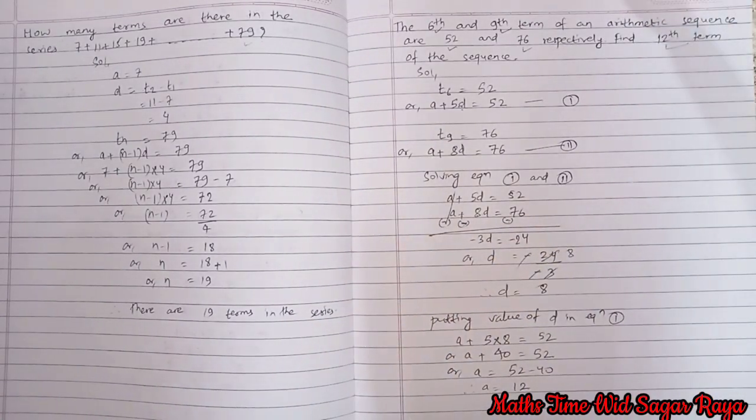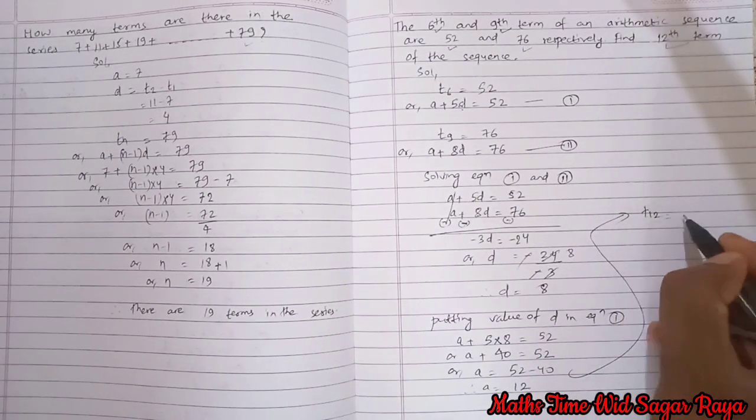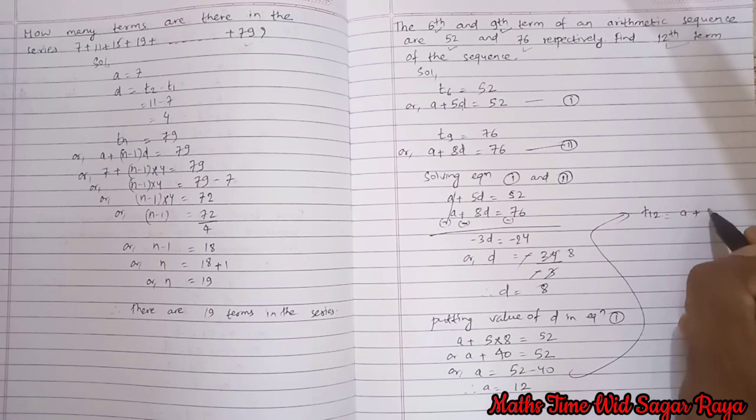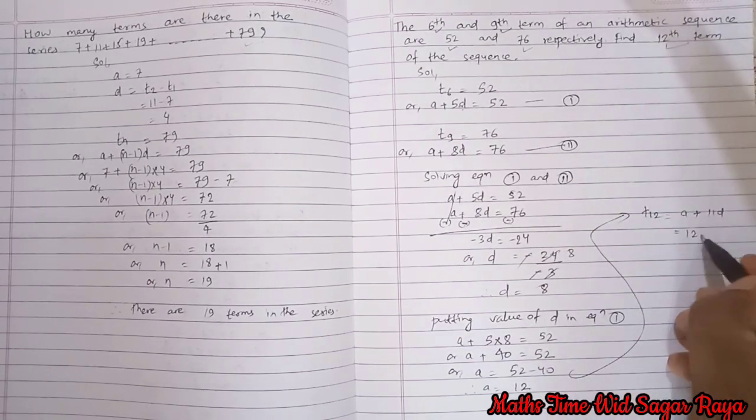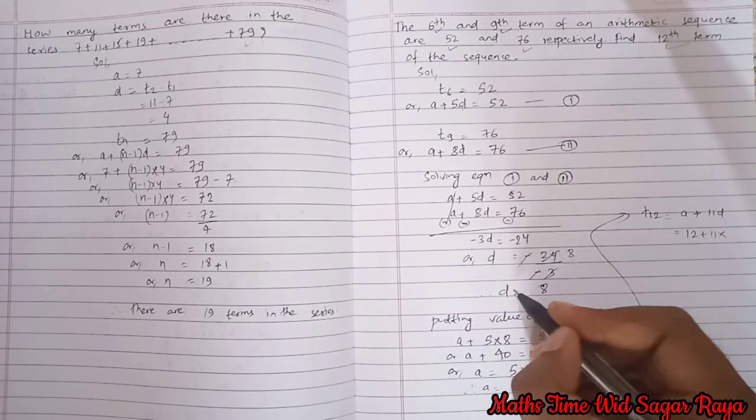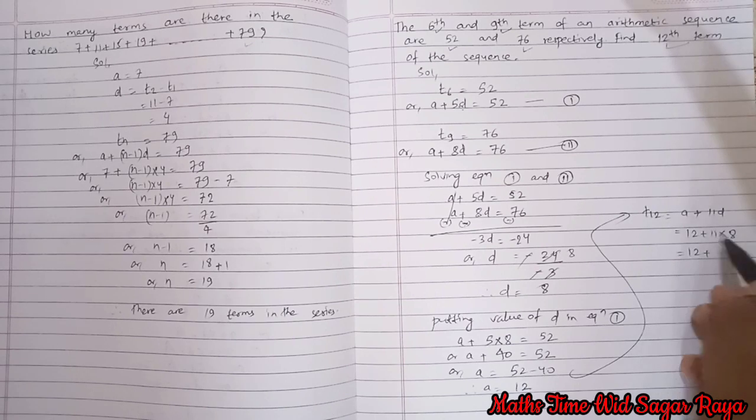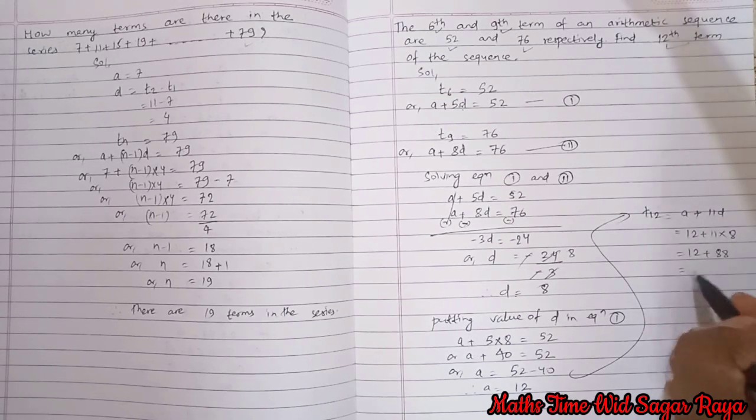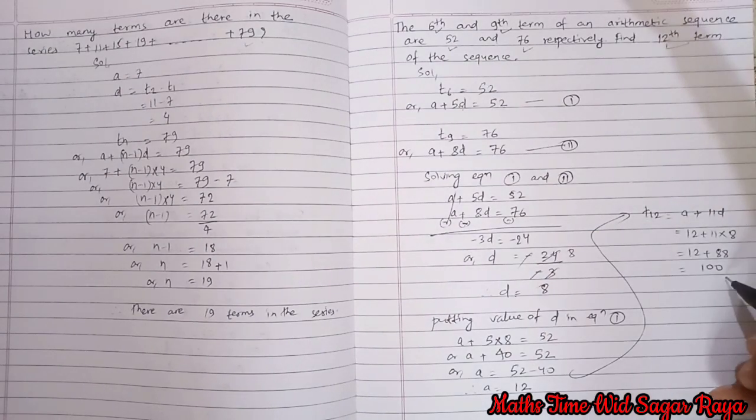So after finding this a and d, now we can find 12th term also. So 12th term means t12, and formula is a plus 11d. So value of a here is 12 plus 11 into value of d is 8. So 12 plus 11 times 8 is 88, so 88 plus 12 it will be 100.